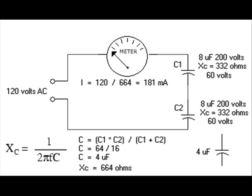Pictured here are two eight microfarad 200 volt capacitors placed in series. Each will have a capacitive reactance of 332 ohms. Because this is a series circuit, those resistances will add to 664 ohms.